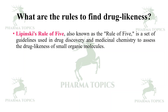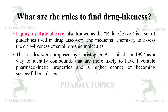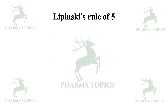The first rule to find drug likeness is Lipinski's Rule of Five, also known as the Rule of Five. It is a set of guidelines used in drug discovery and medicinal chemistry to assess the drug likeness of small organic molecules. These rules were proposed by Christopher A. Lipinski in 1997 to identify compounds more likely to have favorable pharmacokinetic properties and a higher chance of becoming successful oral drugs.